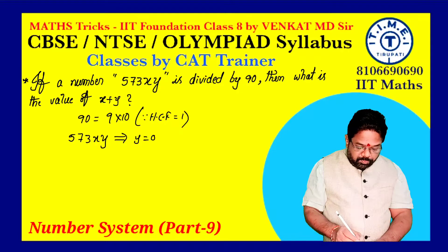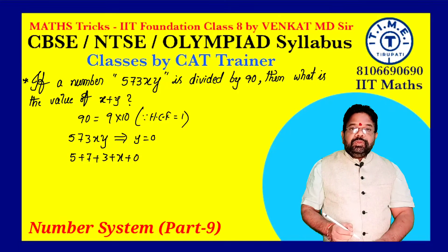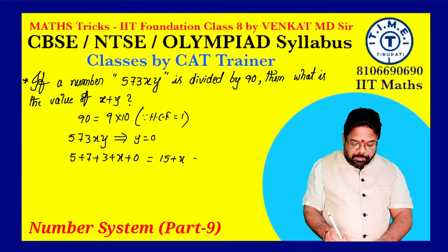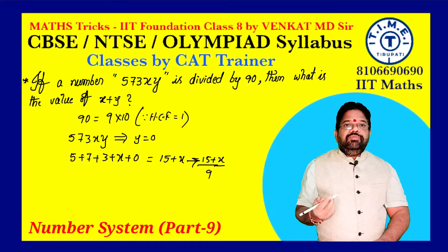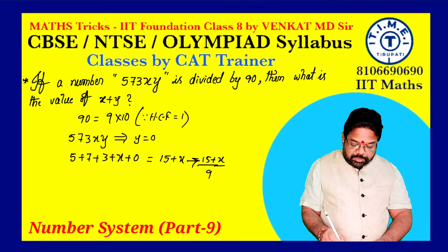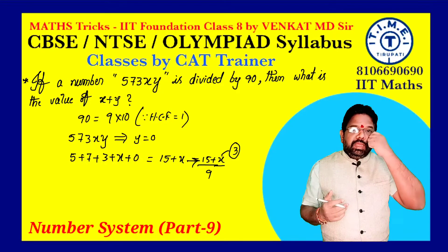We will check the digit sum: 5 plus 7 plus 3 plus X plus Y. Y is already 0. So the sum of the digits is 15 plus X. This 15 plus X must be divisible by 9. What number greater than 15 is divisible by 9? That is 18. So 15 plus X equals 18, meaning X equals 3. 15 plus 3 is 18, and 18 is divisible by 9.